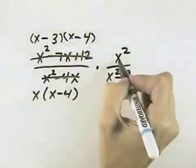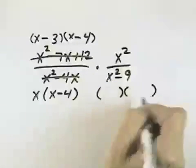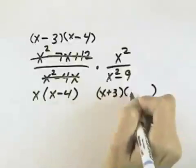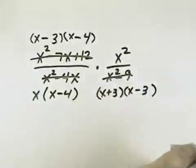This numerator already has two factors, x and x, so we can leave it. And then finally, the second denominator is the difference of squares, so we have the sum and the difference of their square roots, which would be x plus 3 times x minus 3.